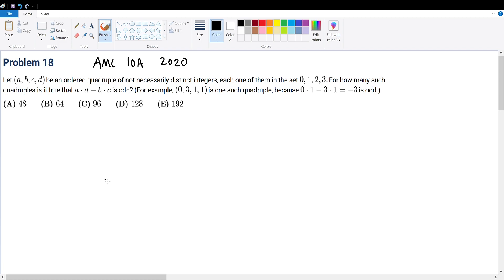For example, 0, 3, 1, 1 is one such quadruple. So when reading this type, let's first try to model out what we need to do. We're trying to find an ordered quadruple such that the subtraction of A times D minus B times C is odd.